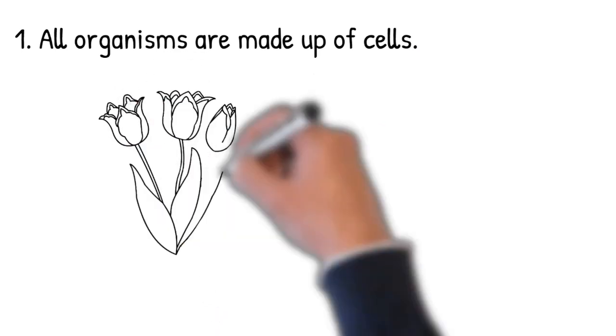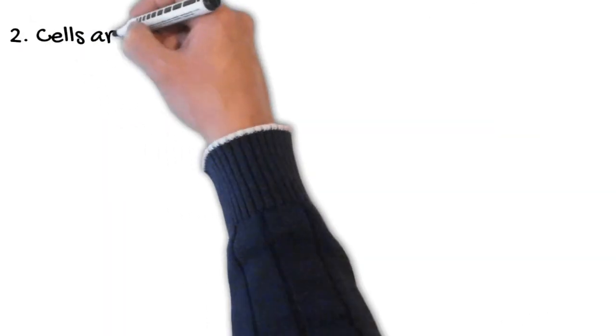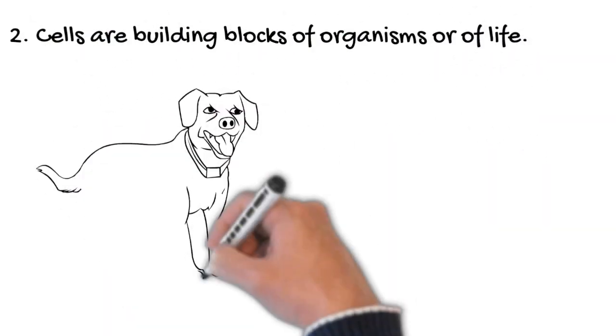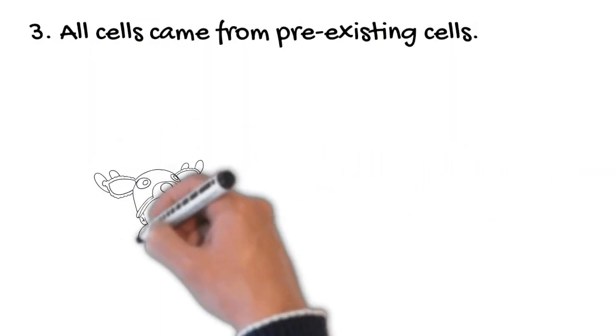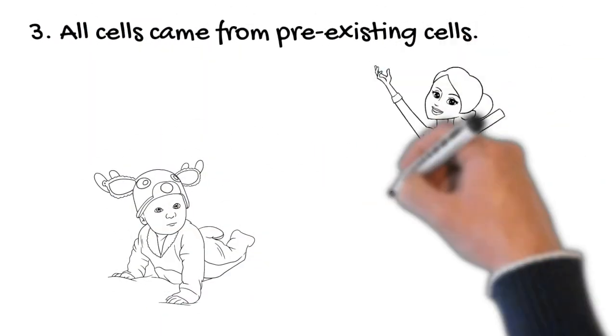First, all living things are made up of cells. Secondly, a cell is a building block of organisms. And lastly, all cells came from pre-existing cells.